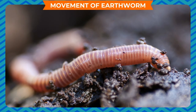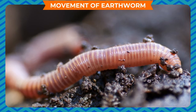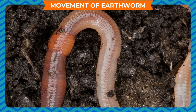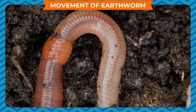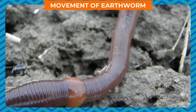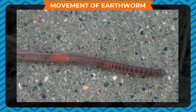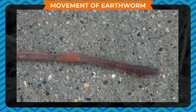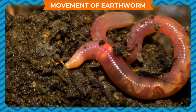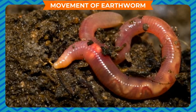Movement of earthworm: An earthworm has a long tube-like body with no bones. Its body shape is maintained by fluid inside its body, called a liquid skeleton. Its body is made up of segments which help in crawling. It extends the front part of the body while keeping the rear end fixed to the ground, then fixes the front part and pulls the rear end forward. Its body secretes a slimy substance to help in the movement.